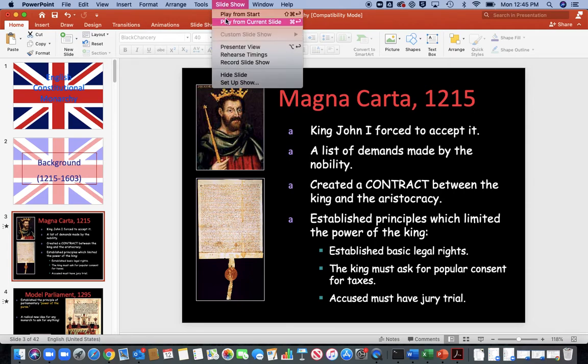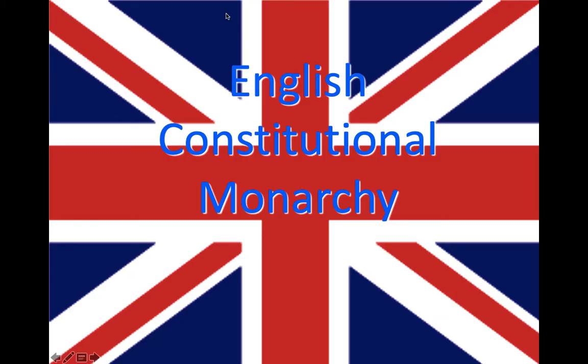Let's talk about the English Revolution. What we have happening here is really a discussion about where power should reside in a state. In the last few lessons, we talked about absolutism in the French state and the Russian state. England will be no different in that the king tried to have absolute power, but the English people will rebel, and we can see a movement towards what we would call a constitutional state.